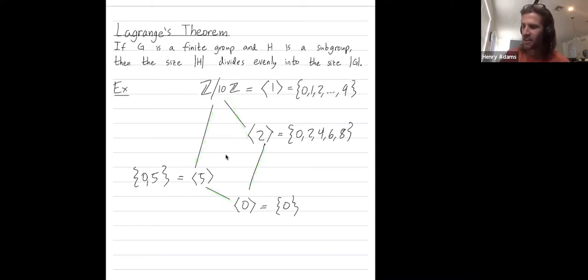Who's a subgroup of who? So I'm saying this is a subgroup of both of these. And this is a subgroup of here. This is a subgroup of there. But let's look at the various sizes. So z mod 10z has size 10. This subgroup generated by 2 has size 5. The subgroup generated by 5 has size 2. The subgroup generated by just 0 has size 1.